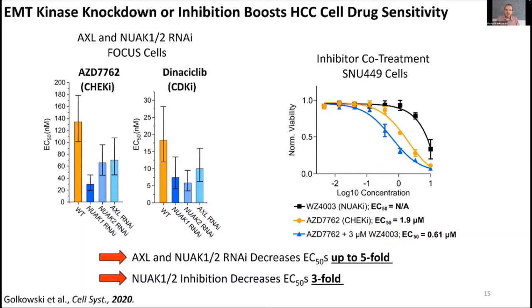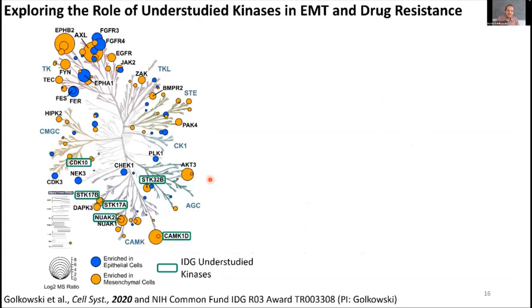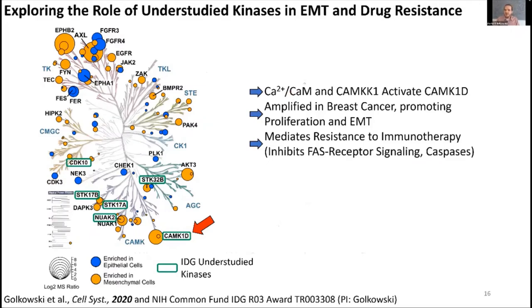As another example, the most progressed understudied kinase we are working on is CAMK1D. This kinase is activated by calcium calmodulin and CAMK kinase 1. It was previously found to be amplified in breast cancer, shown to promote proliferation and some EMT markers, and very recently shown to mediate resistance to immune therapy by inhibiting Fas receptor signaling and caspases. CAMK1D may have overlapping roles with NUAK1 and 2 in these cells. We find this kinase highly expressed in mesenchymal HCC cells and phosphoactivated.